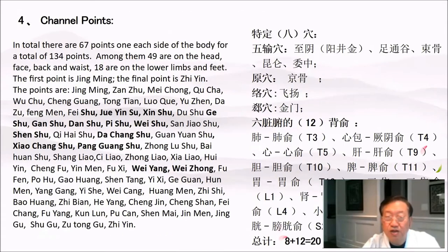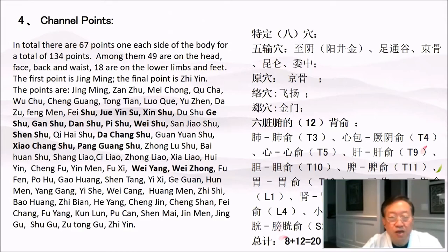Channel points: in total there are 67 points, one on each side of the body for a total of 134 points. Among them, 49 are on the head, face, back, and waist, and 18 are on the lower limbs and feet. The first point is jingming and the final point is zhi yin.